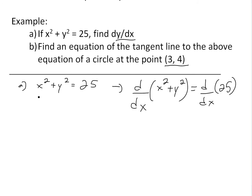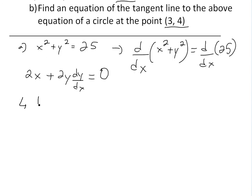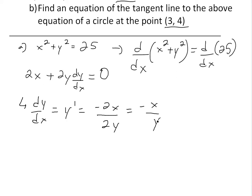Taking the derivative of x squared using the power rule gives us 2x. Now we take the derivative of y squared: we get 2y, but since y is a function of x, we need to use the chain rule, so we multiply by dy over dx. On the right side, 25 is a constant, so its derivative equals zero. Solving for dy over dx, we move 2x to the right side to get negative 2x divided by 2y, then cancel the 2s to get negative x over y.